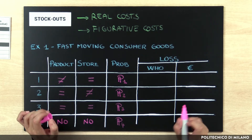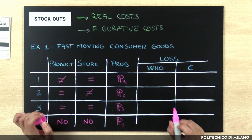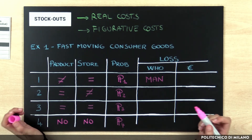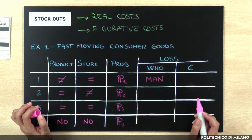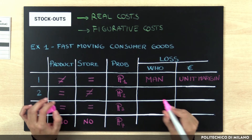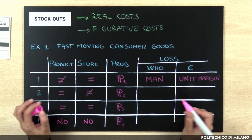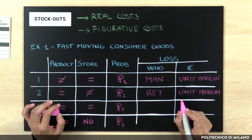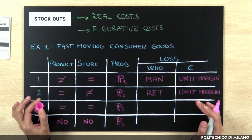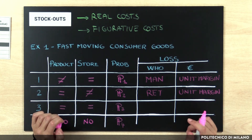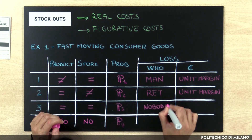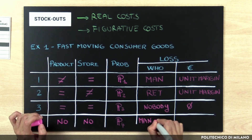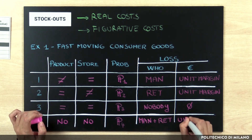We also have to assess the loss related to each behavior — specifically, the amount of the loss and who sustains the stock-out costs. In the first situation, there can be a loss for the manufacturer if the alternative product bought by the customer is produced by another company; this loss equals the manufacturer's unit margin. In the second situation, there is a loss for the retailer equal to the retailer's unit margin, since the customer buys the same product in another store. In the third situation, there are no lost sales since the purchase is just postponed, so the cost is zero. In the fourth situation, both the manufacturer and the retailer lose their unit margin.